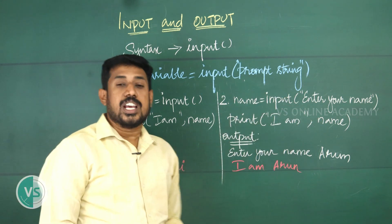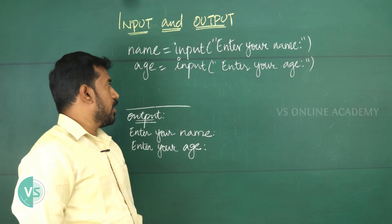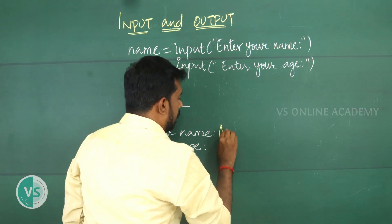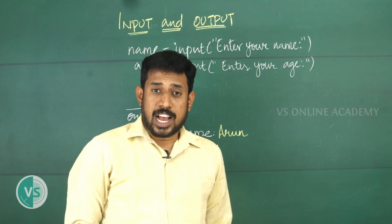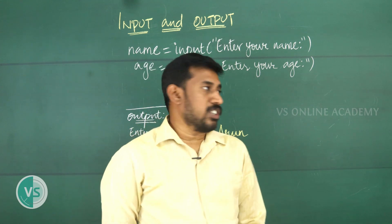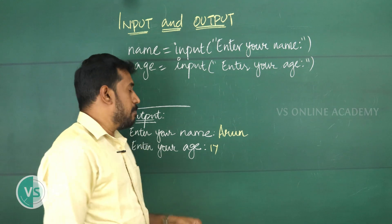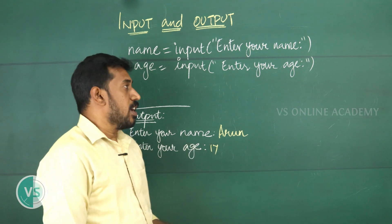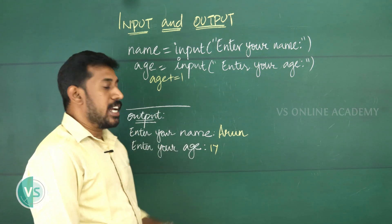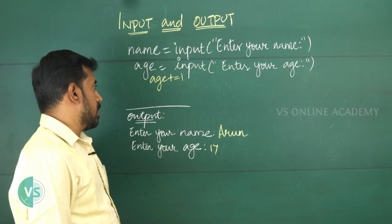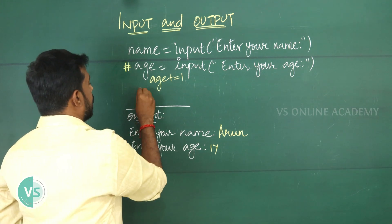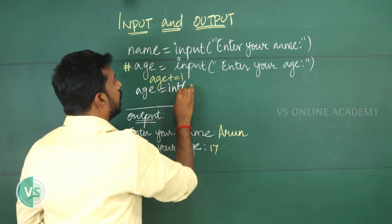Another example: name = input('Enter your name') and age = input('Enter your age'). An important property of Python's input function is that everything is treated as a string. So if the user enters 17 for age, Python treats it as a string. If you try age += 1, a TypeError will occur. To fix this, we typecast: age = int(input('Enter your age')).